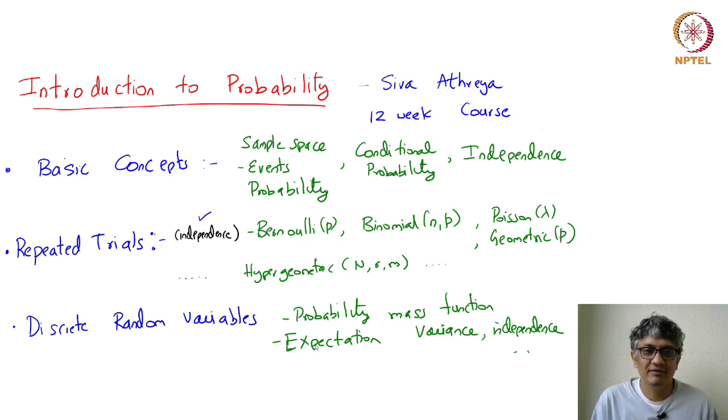And once all this is done, we will formalize notation and place them as random variables. They are called discrete random variables, and out of which there is a natural notion of probability mass function, expectation, variance, and independence, which we will thoroughly discuss.